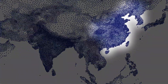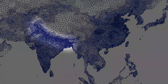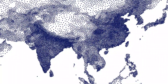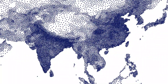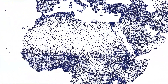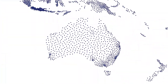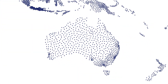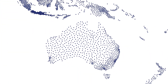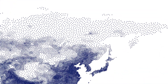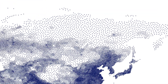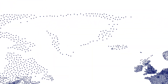You might notice that China and India have regions that are especially dark. And you might see that much of North Africa, Australia, Russia, and Greenland are very light in color.